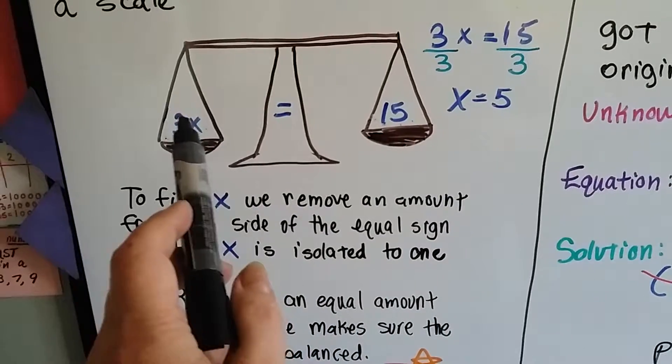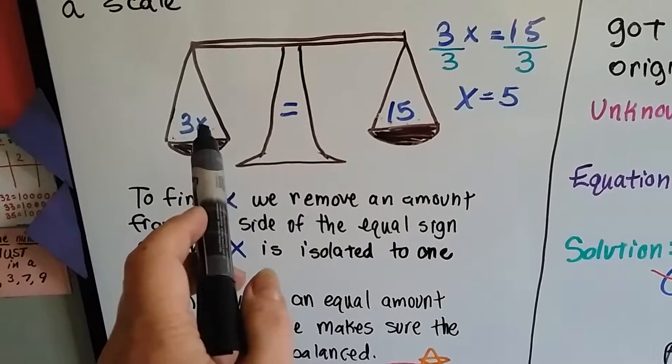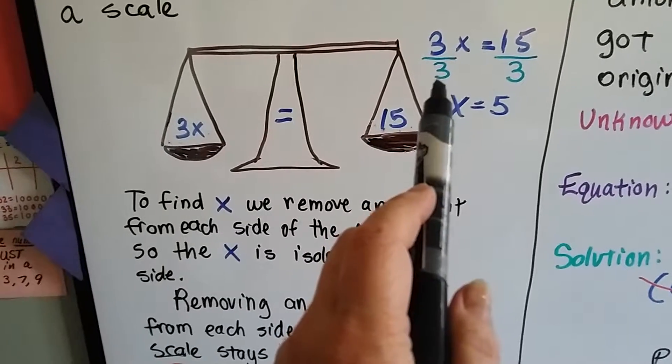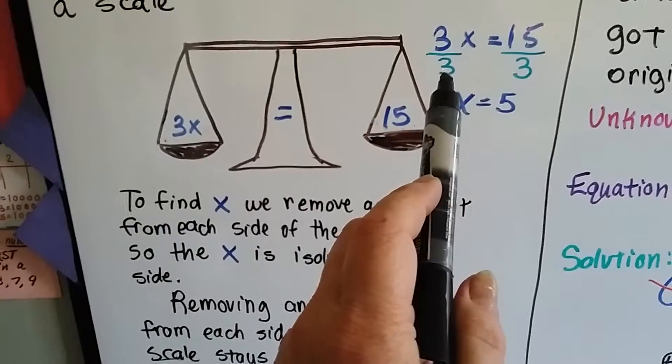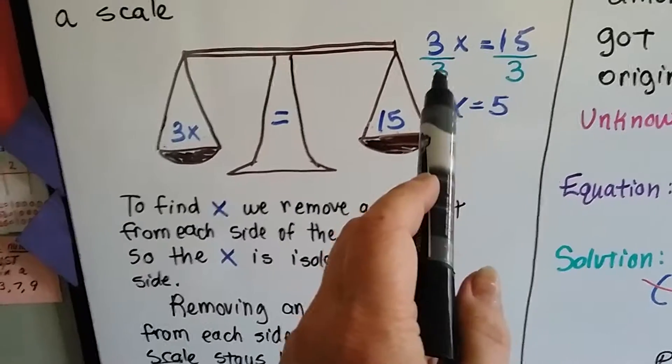So because this is 3 times a number, 3 times x, we're going to use the opposite division to remove it. So we would divide both sides by 3.